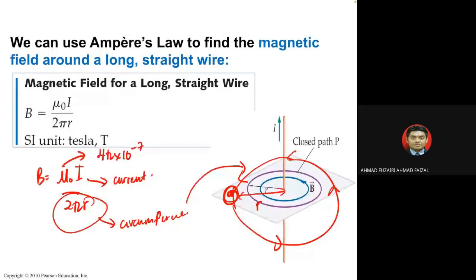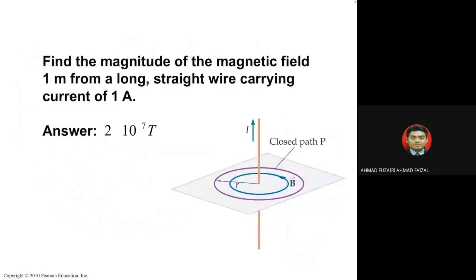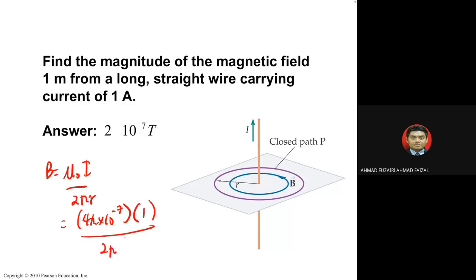Example: find the magnitude of the magnetic field one meter from a long straight wire carrying 1 A. Using B = μ₀I / 2πr: B = (4π × 10⁻⁷ × 1) / (2π × 1) = 2 × 10⁻⁷ T.